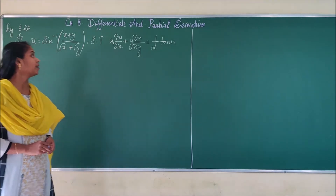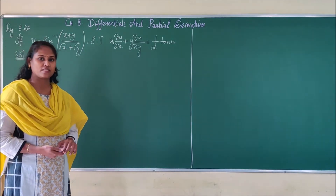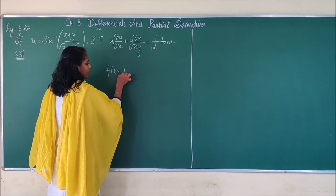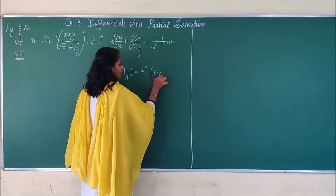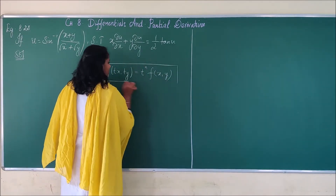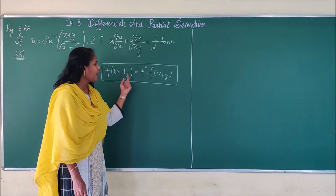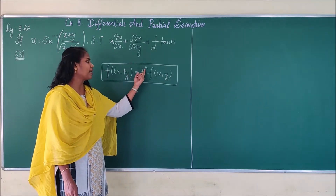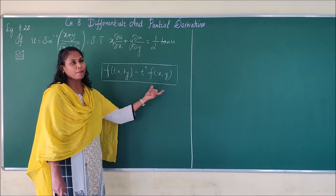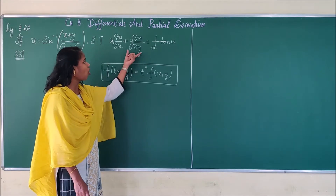Good morning students. In the last video we learned about the definitions of Euler's theorem and the homogeneous condition. If f(tx, ty) = t^n · f(x, y), then the function is said to be homogeneous. If I multiply my variables x by t and y by t and I can write it in the form t^n · f(x, y), then the function is said to be homogeneous. If the function is homogeneous, I can apply Euler's theorem.